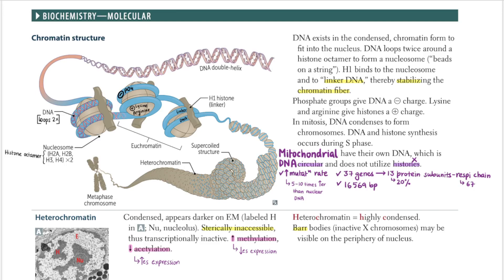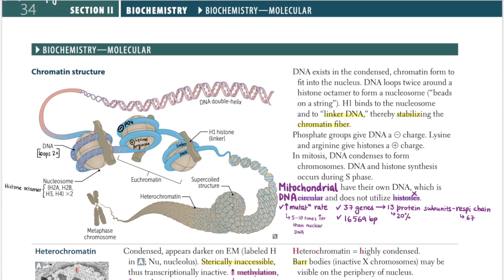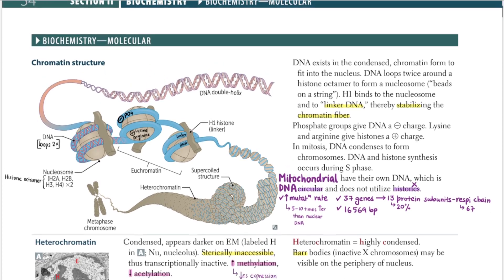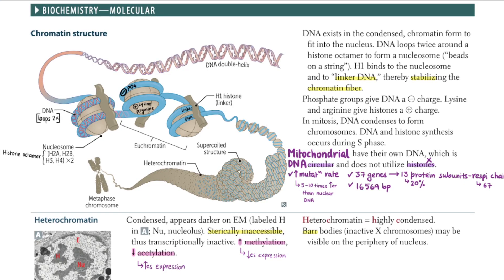Hi everyone, I'm planning to do a page-by-page review of the USMLE First Aid so that it reinforces my revision and helps you guys out also. Let's get started. This is the first page of biochemistry dealing with chromatin structure — page number 34. You don't need to look at the paragraph; just understand everything from the image itself.